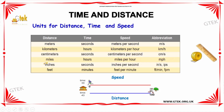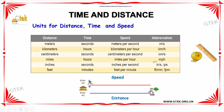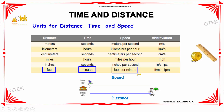If the distance is given in inches and the time is in seconds, then the speed is inches per second. If the distance is given in feet and the time is in minutes, then the speed is feet per minute, abbreviated ft/min or fpm.